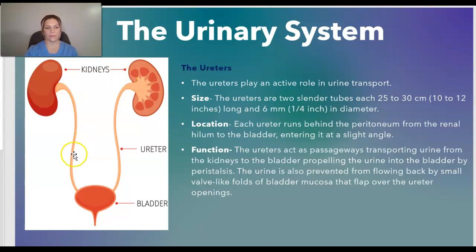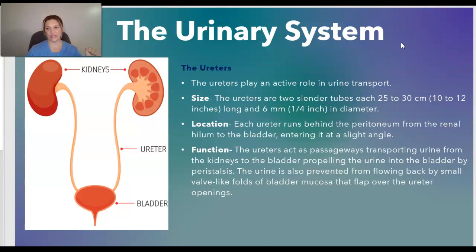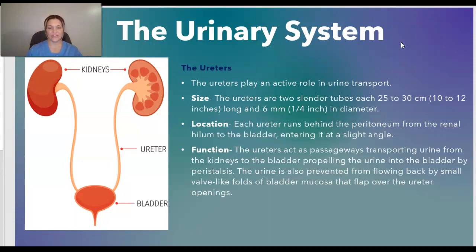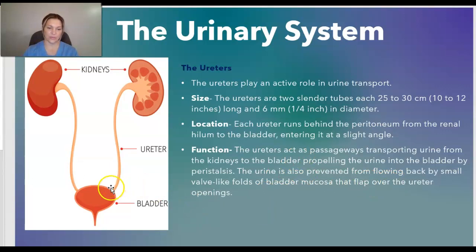Moving on to the ureters: you have a kidney on the right side and a kidney on the left side, and then ureter tubes — one from each kidney — that extend from the kidney into the bladder. The ureters are two slender tubes, each 25 to 30 centimeters long and six millimeters in diameter. Each ureter tube runs behind the peritoneum from the renal hilum to the bladder, entering it at a slight angle. The function of the ureters is to transport urine from the kidneys to the bladder, propelling urine by peristalsis, and urine is prevented from flowing back by small valve-like folds of the bladder mucosa that flap over the ureter openings.